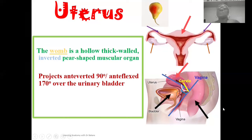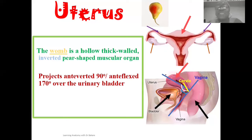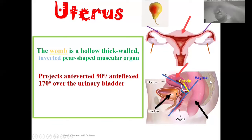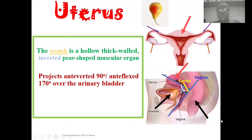This does not mean that other positions of the uterus don't exist, but this is what the majority of the human population will exhibit. The uterus can also be placed in a retroverted or retroflexed position, meaning the uterus is directed more vertically and even towards the spine posteriorly. However, the anteverted and anteflexed position is the general configuration.